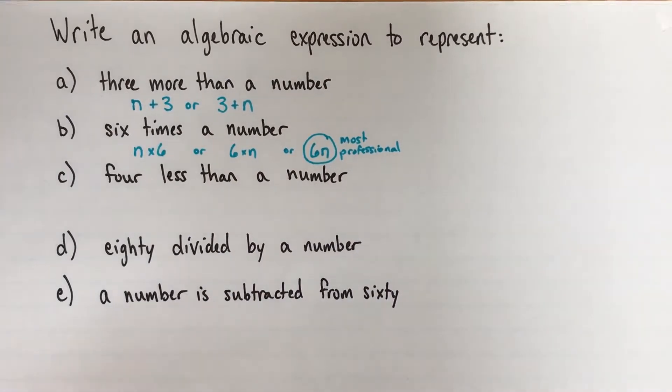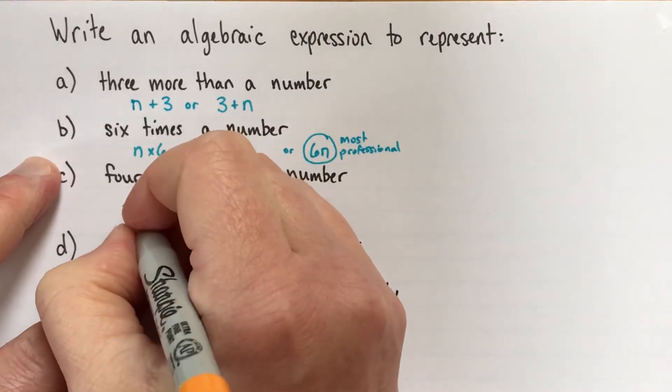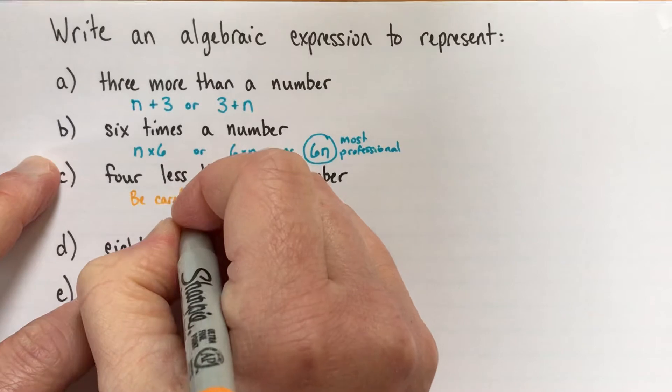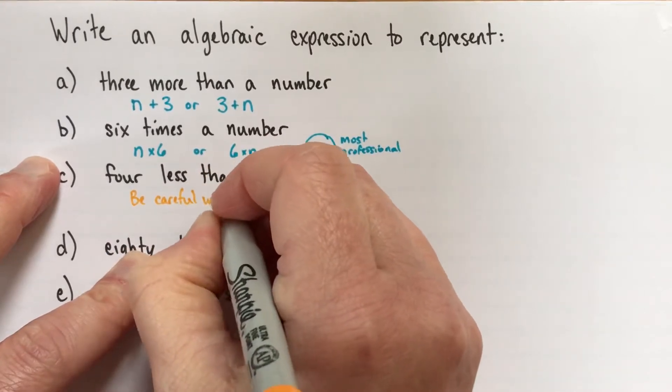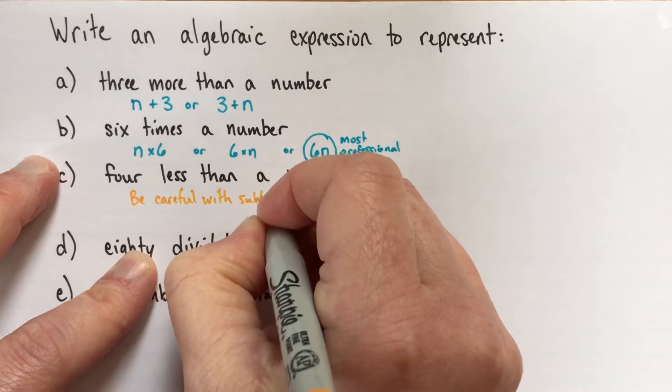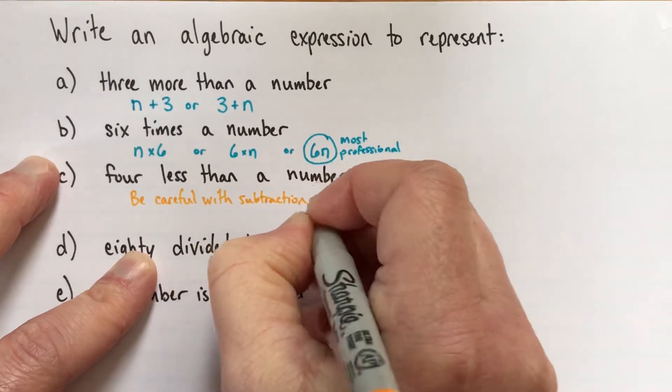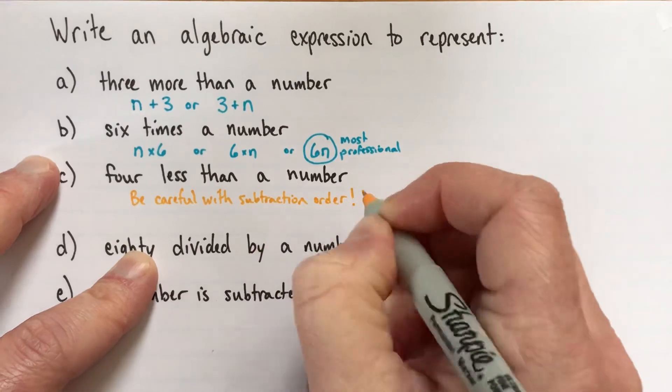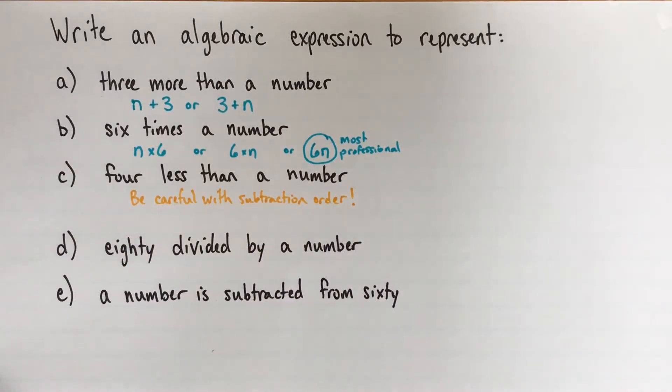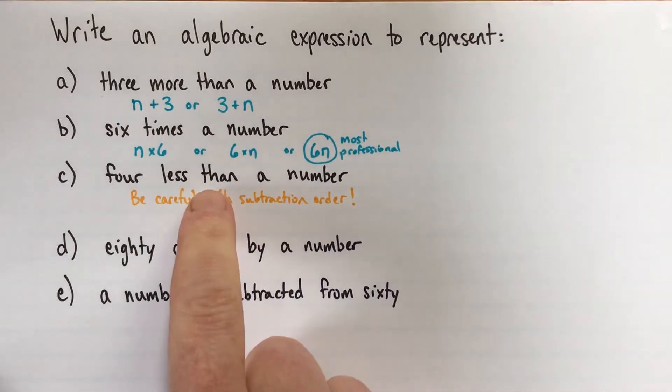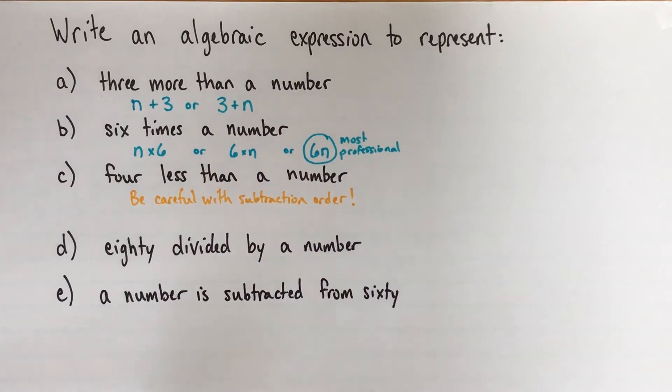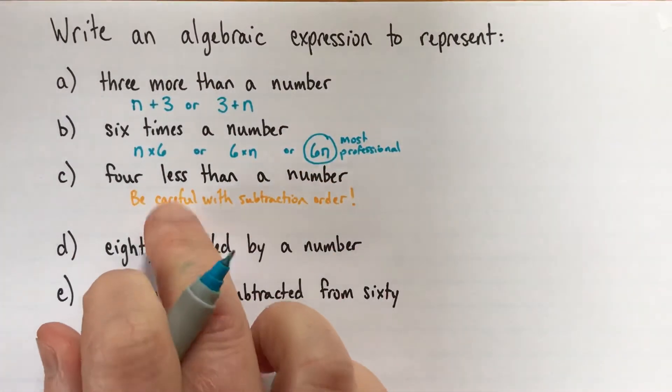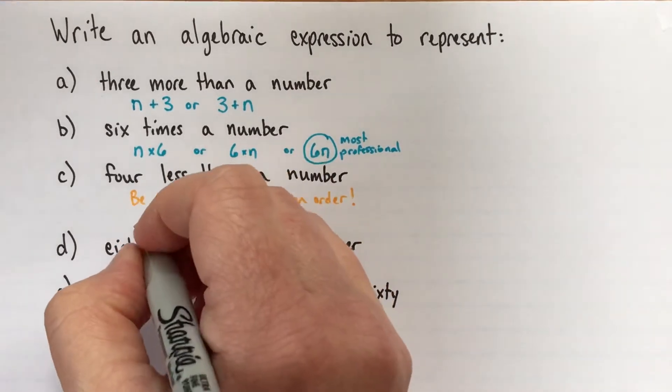Alright, four less than a number. This one actually, I think might be the hardest of all of them. So I'm going to write a little note here. Be careful with the subtraction order. So certainly my students, they're much more likely to make a mistake on a subtraction question than on an addition or multiplication question.